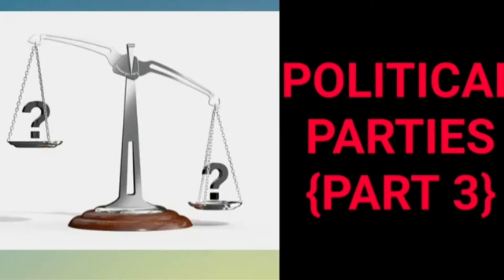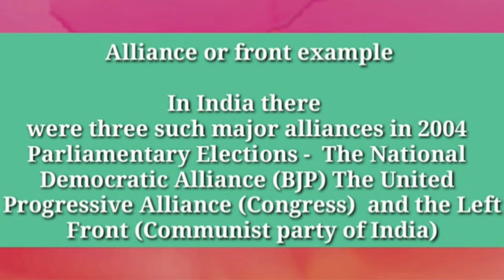From the last video lecture, you already know that in a multi-party system, political parties come together to form alliances or fronts. In India's 2004 parliamentary elections, three major alliances were formed: the National Democratic Alliance (BJP), the United Progressive Alliance (Congress), and the Left Front (Communist Party of India).